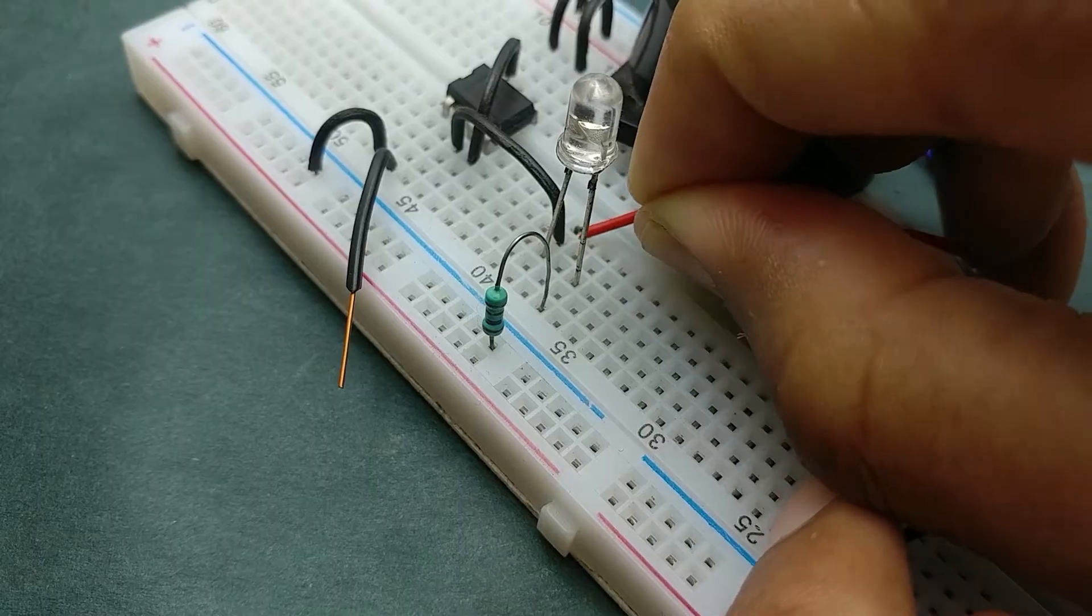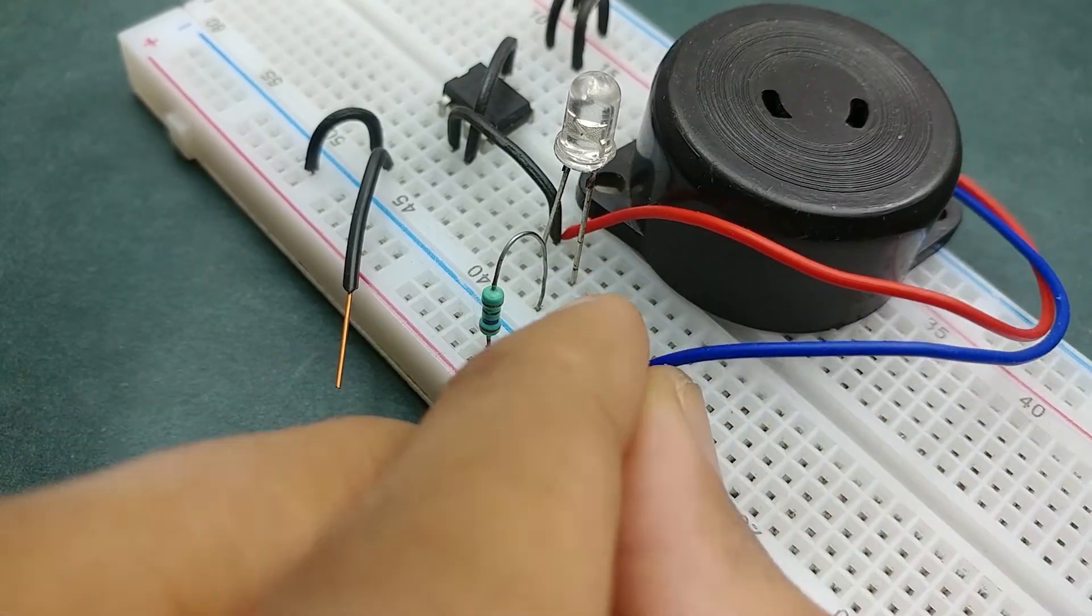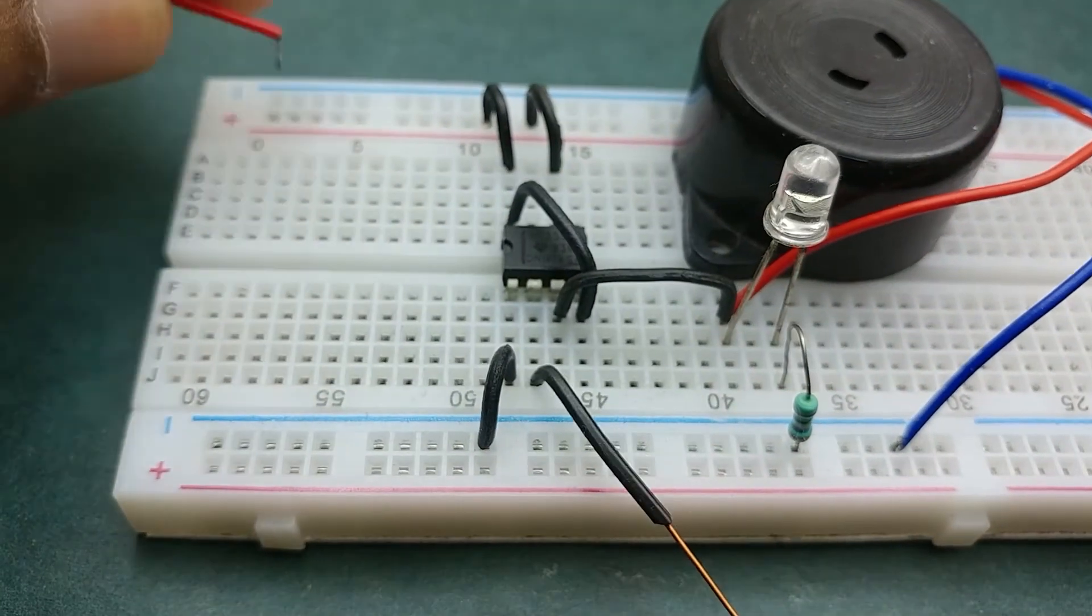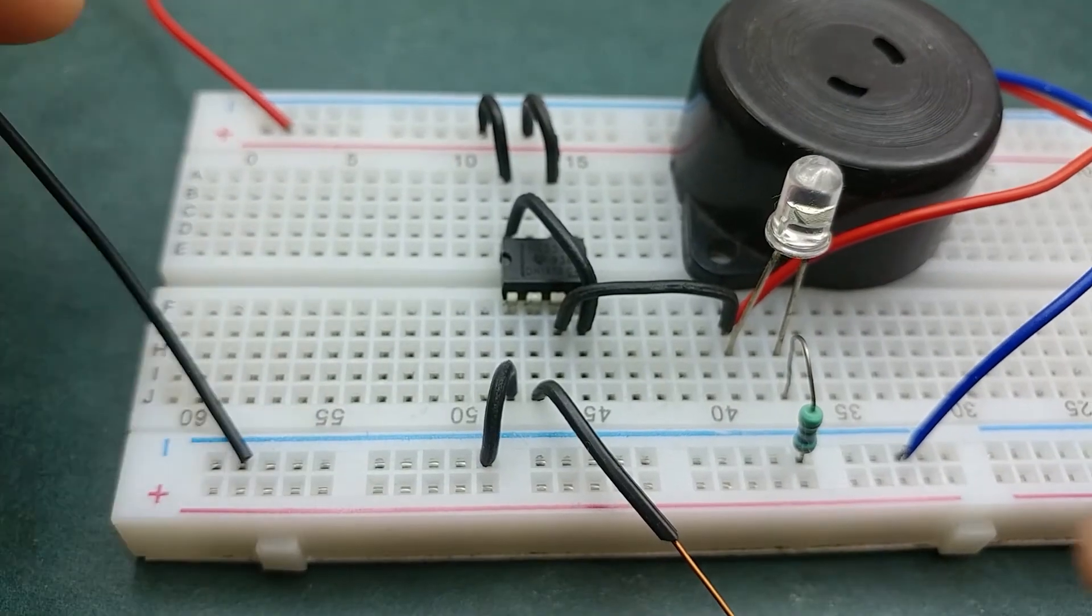Now connect a buzzer between the output of 555 timer IC and negative rail. You can test the circuit we have built so far by connecting the power supply and touching the sensing wire.